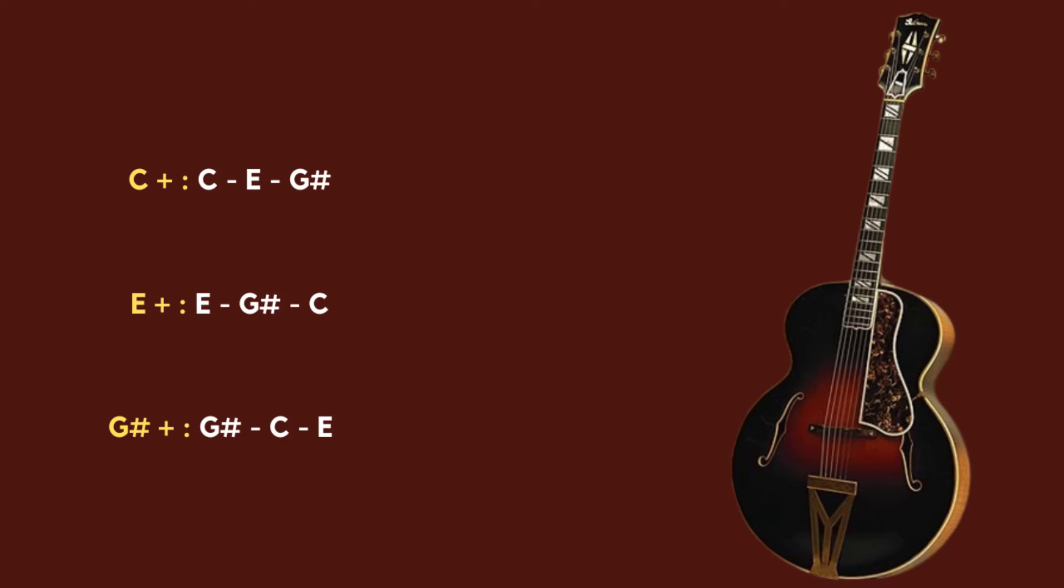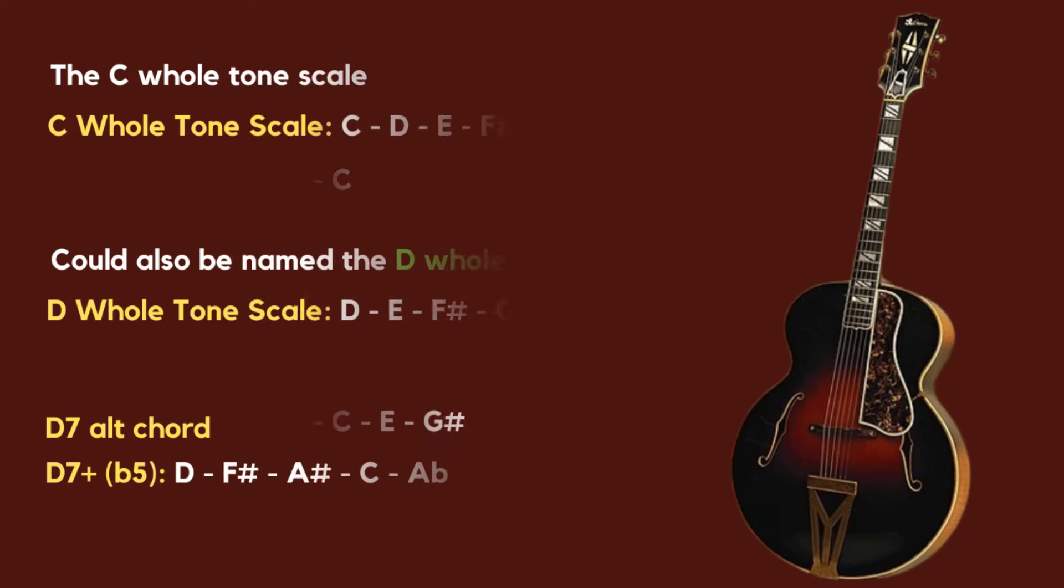Throughout this video I've been referring to these triads as C augmented triads. But as we know they could also be named E augmented or G sharp augmented. We've also discovered that when we overlay a C augmented triad over a D dominant seventh, we get the effect of a D9 sharp 11. So a good idea is to take this scale practice that we're doing and see how we could apply it to different situations.